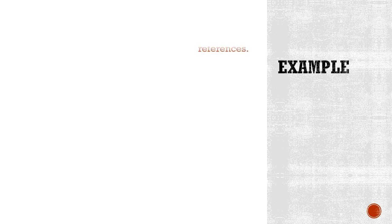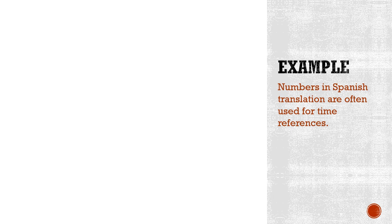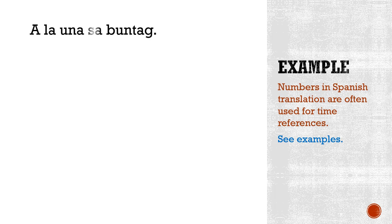Now let's have a few examples. Numbers in Spanish are often used for time references. For example: 'Alauna sa buntag' means one in the morning — 'Alauna' represents one, which is purely Spanish, and 'buntag' is morning. 'Ala siyete sa gabii' translates to seven in the evening. 'Alas quattro sa hapon' is four in the afternoon. 'Alas dosi sa udto' is twelve at noon.